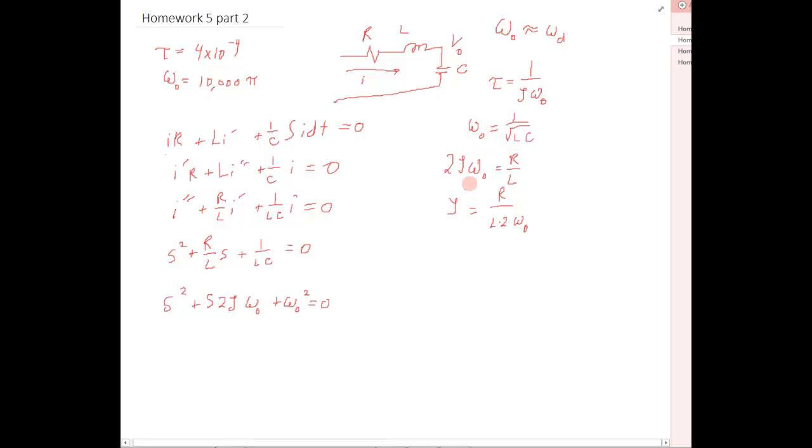So now we can start finding out what circuit elements determine what. The first thing we're going to say is tau equals 1 over zeta omega naught. We know that omega naught is going to equal 1 over square root of LC because omega naught squared equals 1 over LC. And then this term right here, 2 zeta omega naught equals R over L. So zeta equals R over L times 2 times omega naught. So we have a number for tau and we have a number for omega naught.